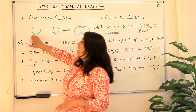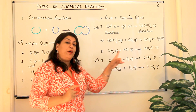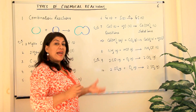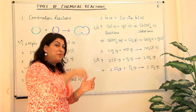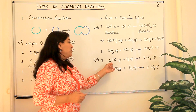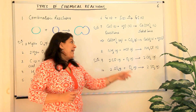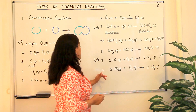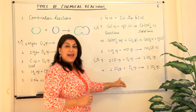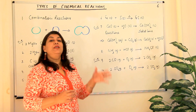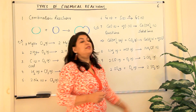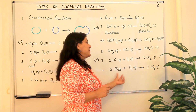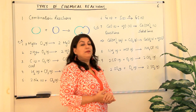Now we come to examples where an element and a compound join together to give one product. Carbon monoxide (a compound) combines with oxygen gas to form carbon dioxide — carbon monoxide is getting oxidized to carbon dioxide, and oxygen is getting reduced, so it is both a redox reaction and a combination reaction. Similarly, sulfur dioxide gas combines with oxygen to produce sulfur trioxide — also a redox reaction plus a combination reaction, since it has more than one reactant and only one product.